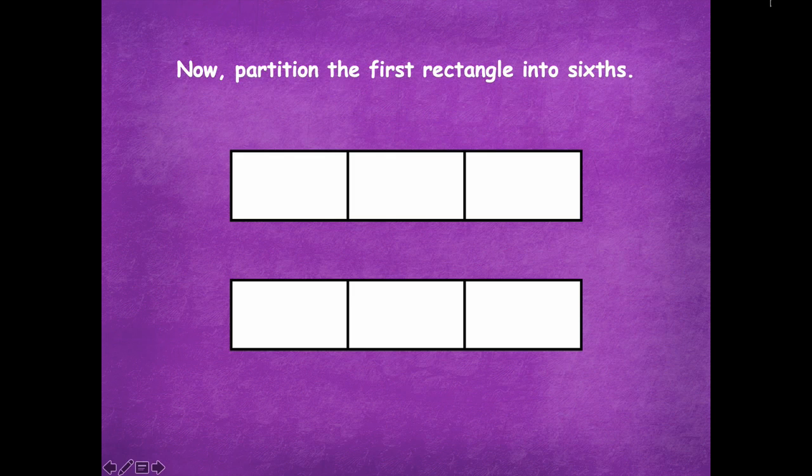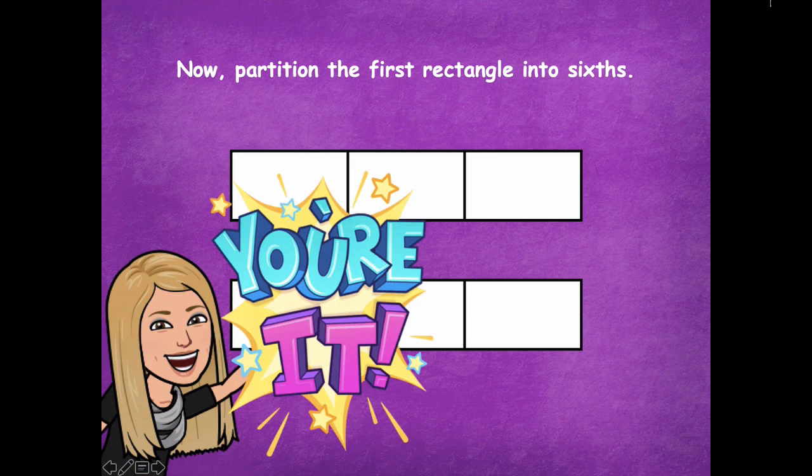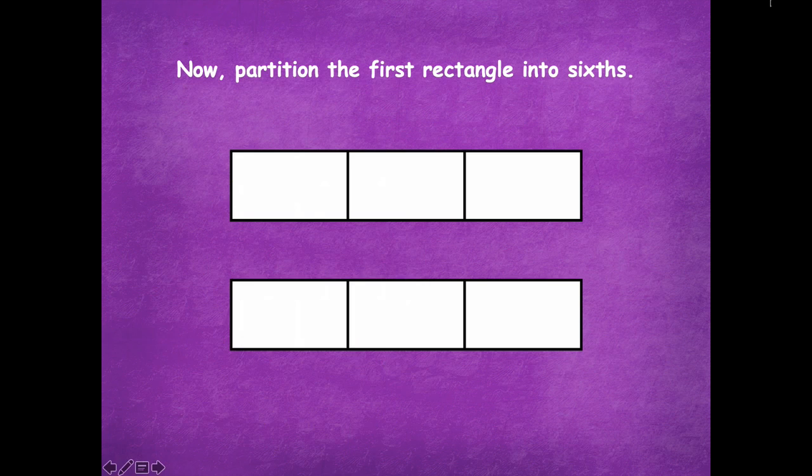So now partition the first rectangle into sixths. So remember the way that you can do that is you have thirds, just split each one of the thirds in half again, and you'll have sixths. Okay, so pause the video, do that only to the first rectangle. Leave the second rectangle alone, and then click play when you're ready for the next step. All right friends, pause if you need more time. So here is my first rectangle into sixths.